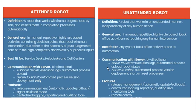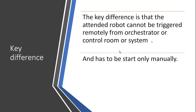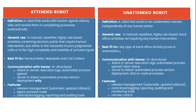The features of Attended Robot include centralized auditing, agent-assisted operations, and release update rollback. Unattended robots handle any type of back-office activity — for example, uploading or downloading files, FTP, and so on. The key difference is that an Attended Robot cannot be triggered remotely from Orchestrator or a remote control system — it has to be started only manually.